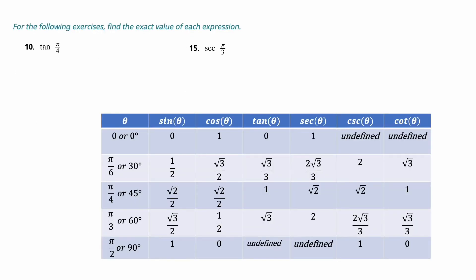For the special angles exercise, find the exact value of each expression. These are the special angles, and once you know how to make this table, you can either memorize it or know how to derive it so you don't have to remember every detail. You need to know these angles: 0, π/6, π/4, π/3, π/2 — equivalently, 0°, 30°, 45°, 60°, and 90°.